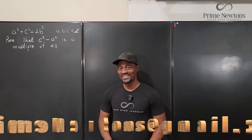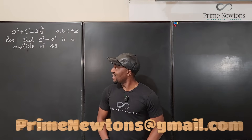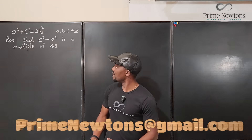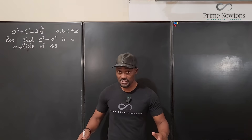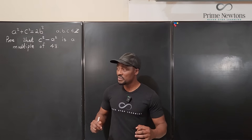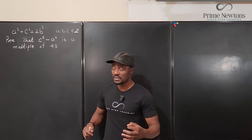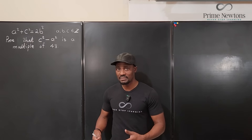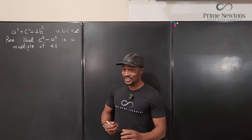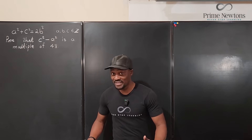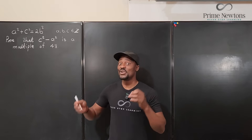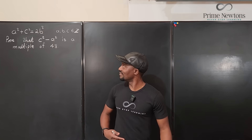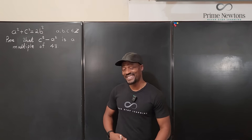Welcome to another video. We have a² + c² = 2b², where a, b, and c are integers, and we're supposed to prove that c² - a² is a multiple of 48. This question is, as I always say, easy if you know what to do and almost impossible if you don't. Let's get into the video.